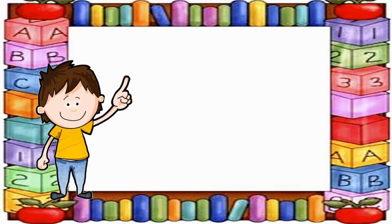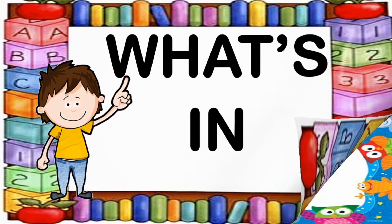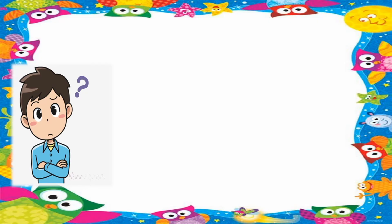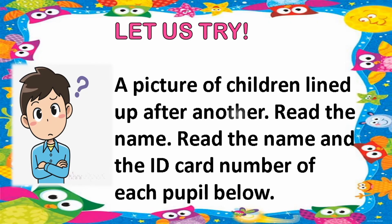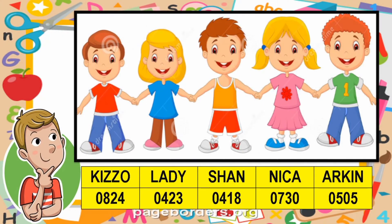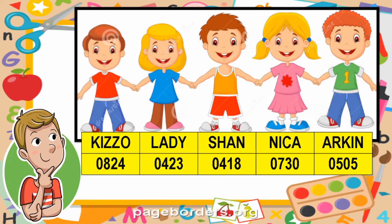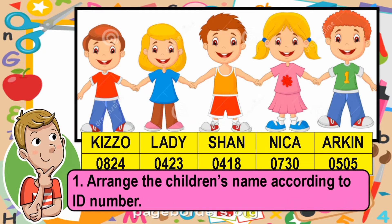Now let us move on to our next activity: What's In. Let us try. There is a picture of children lined one after another. Read the name and ID card number of each pupil below: Kizo, Lady, Shan, Nika, and Arkin, together with their ID card numbers.